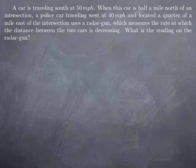A car is traveling south at 50 miles per hour. When this car is half a mile north of an intersection, a police car traveling west at 40 miles per hour and located a quarter of a mile east of the intersection uses a radar gun, which measures the rate at which the distance between the two cars is decreasing. We want to know what is the reading on the radar gun.